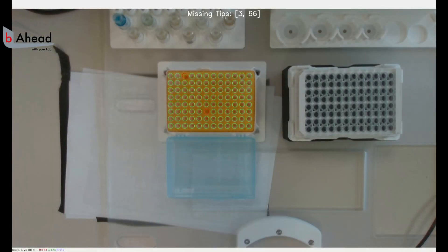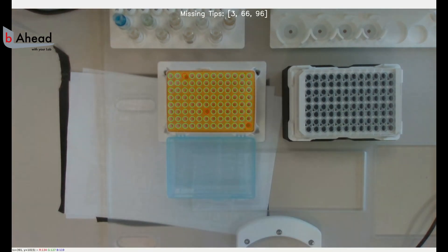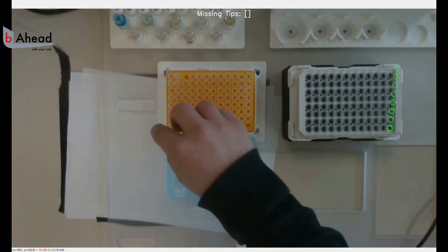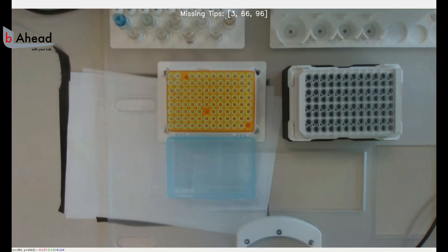To check for missing tips inside the tip rack, another neural network was trained to visually detect the center position of the four corner tips. The other positions are then interpolated based on these detections.